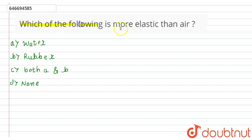Which of the following is more elastic than air? Options are: water, rubber, both A and B, or none.